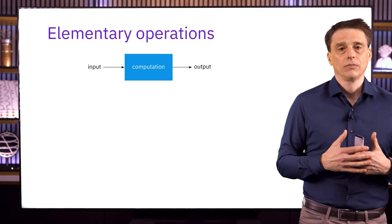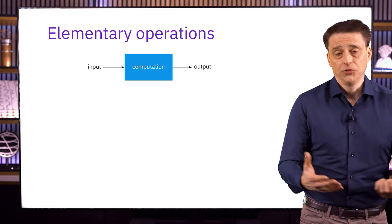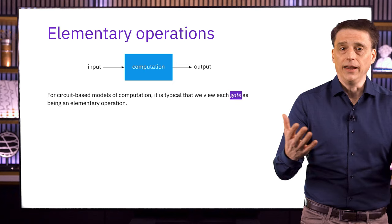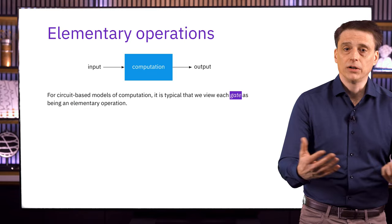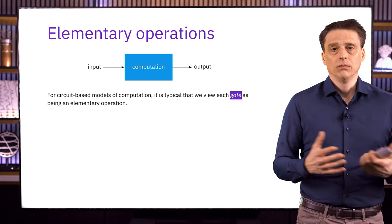At a formal level, there are different ways to define what an elementary operation is, depending upon what computational model we're using. For the purposes of this lesson, we're going to be focusing on circuit models — specifically quantum and Boolean circuits. When we're working with circuits, it's typical that we think about each gate as representing an elementary operation. We've seen several different quantum gates thus far in the series, including X, Y, and Z gates, Hadamard gates, S and T gates, controlled-NOT gates, swap gates, Toffoli gates, and Fredkin gates. We also talked about query gates in the context of the query model, but we won't worry about those for now.